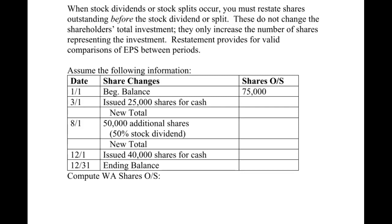You'll find problems in your homework, and possibly even on a test, where it will say shares outstanding during the year were 100,000. If that's what it says and there are no other transactions, then the answer to your weighted denominator is just 100,000. You could put it in a table format, but it would just be 100,000 times 12/12 equals 100,000. So if you see that, you don't have to calculate the denominator — it's given there for you.